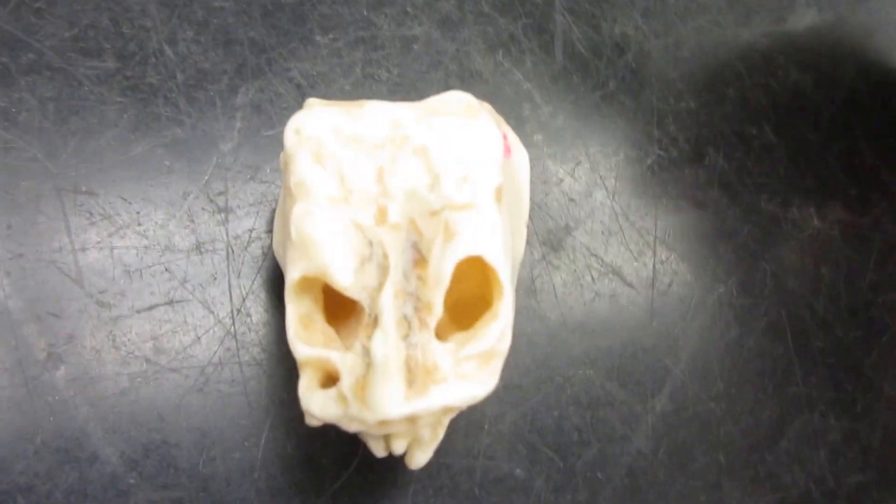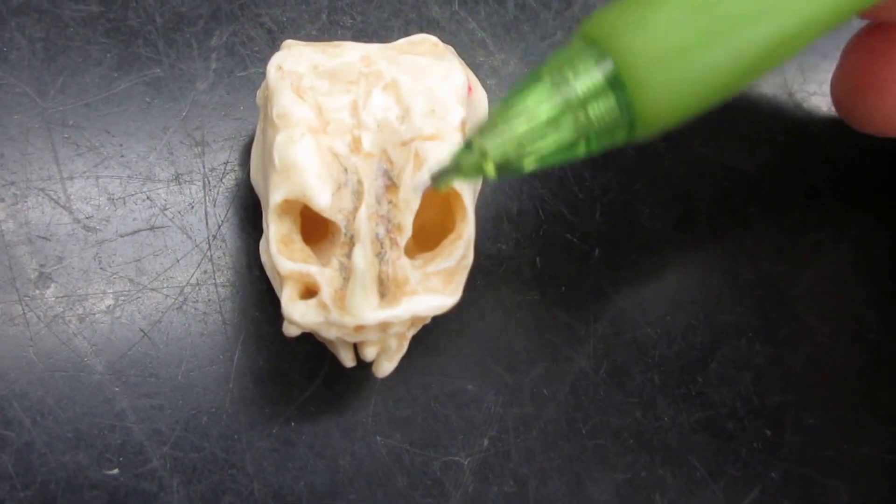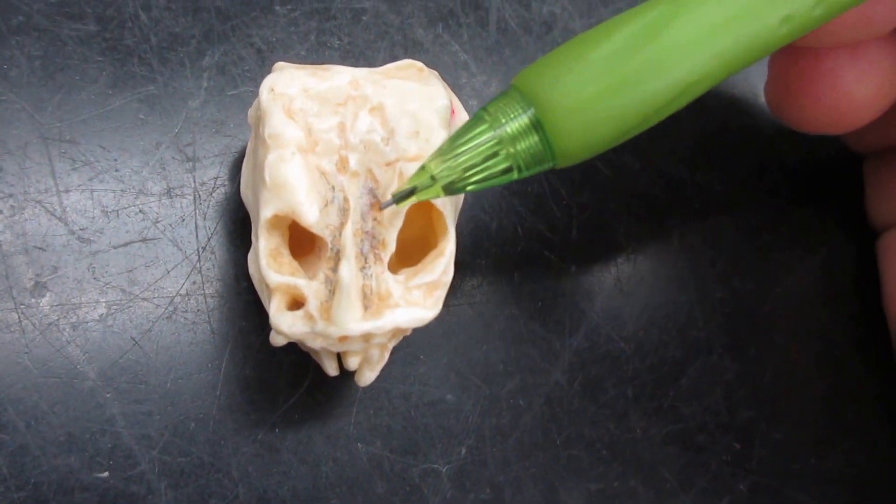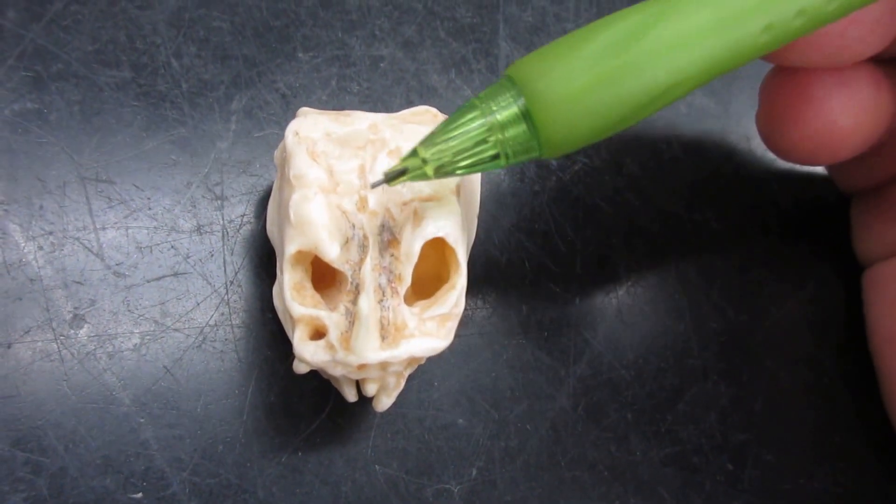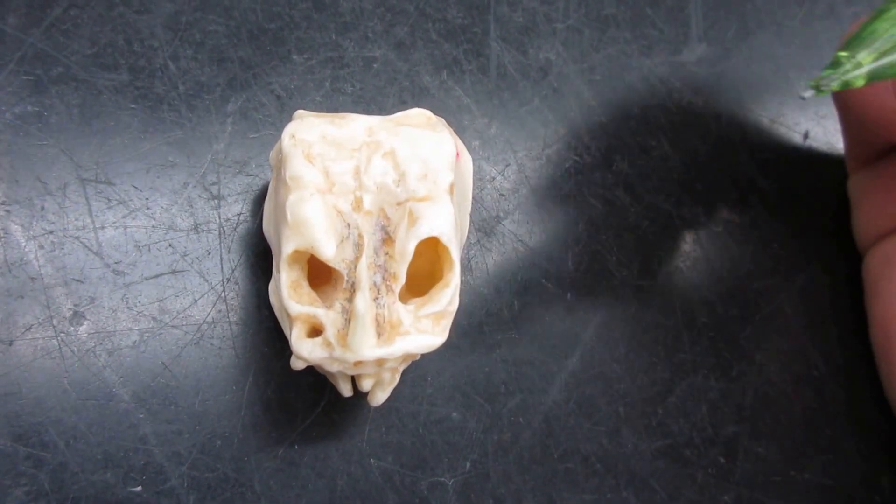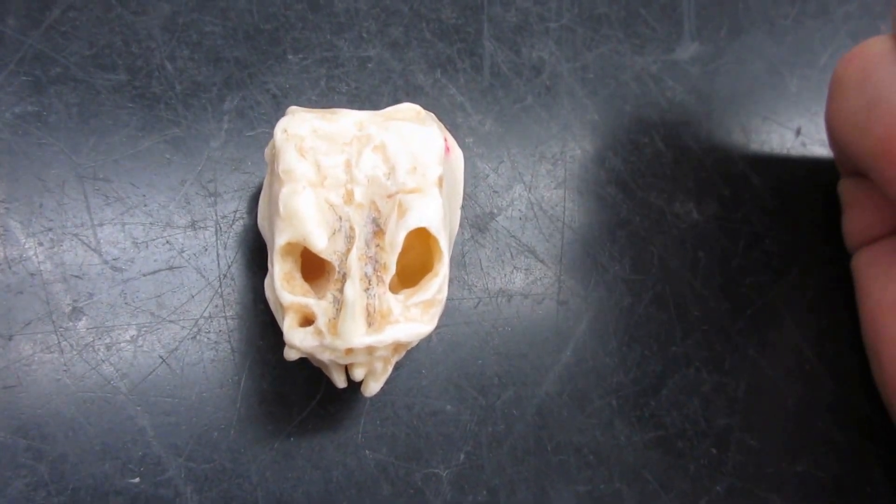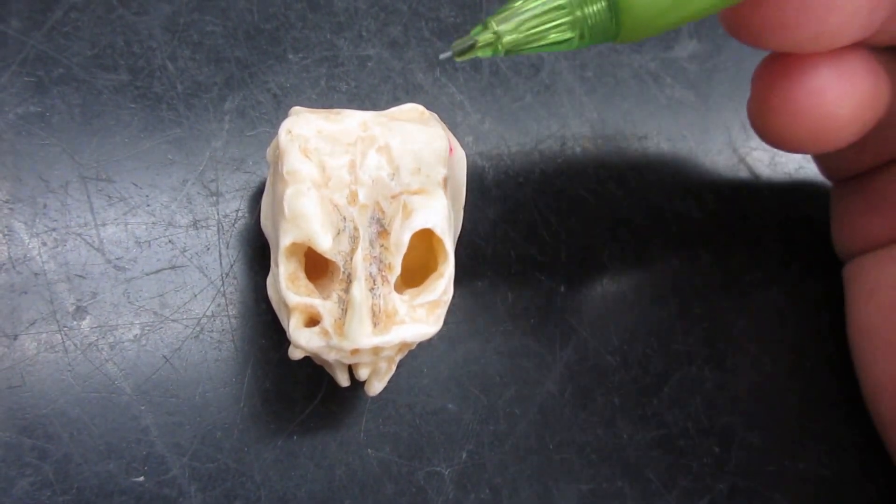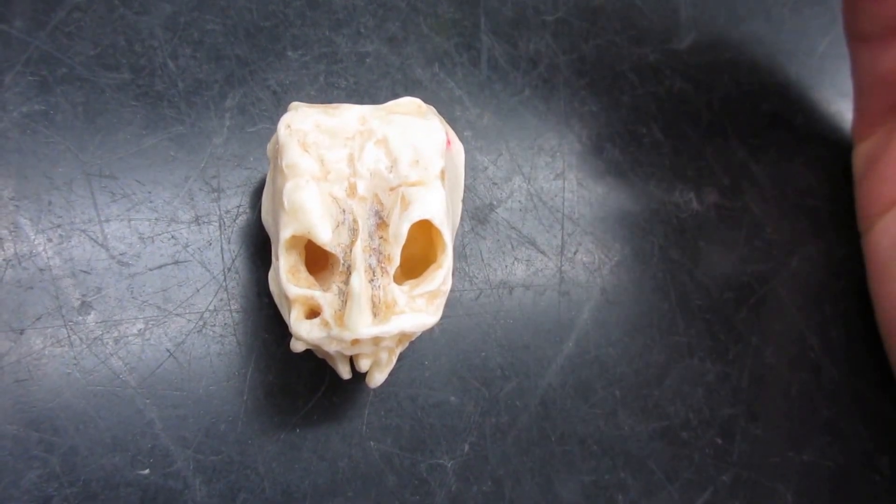When you look closely on the cribriform plate, you'll see a bunch of little holes. Those little holes are called olfactory foramina. Your sense of smell is the olfactory system, and your nerves pass through there to enter into your nasal cavity.